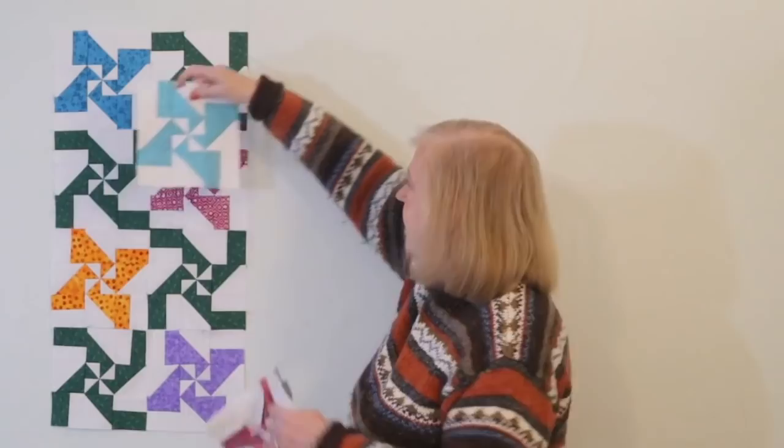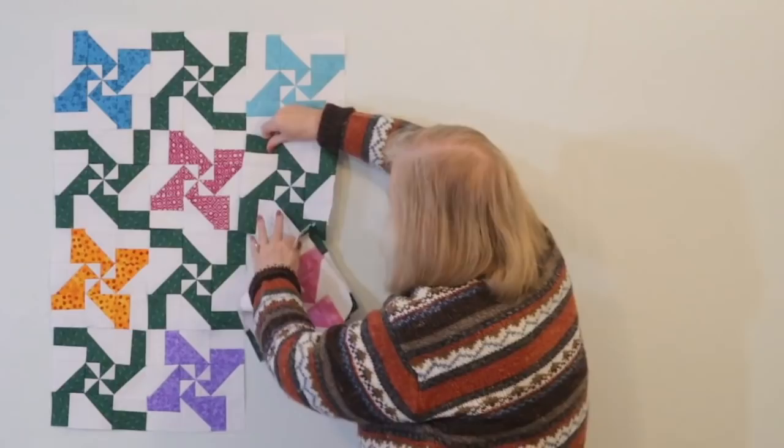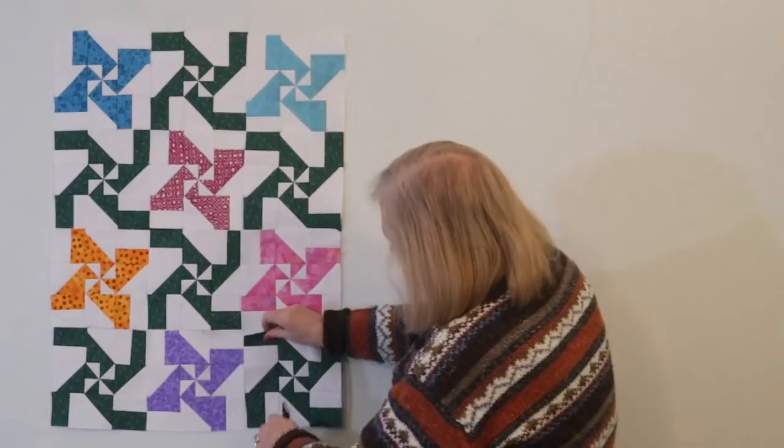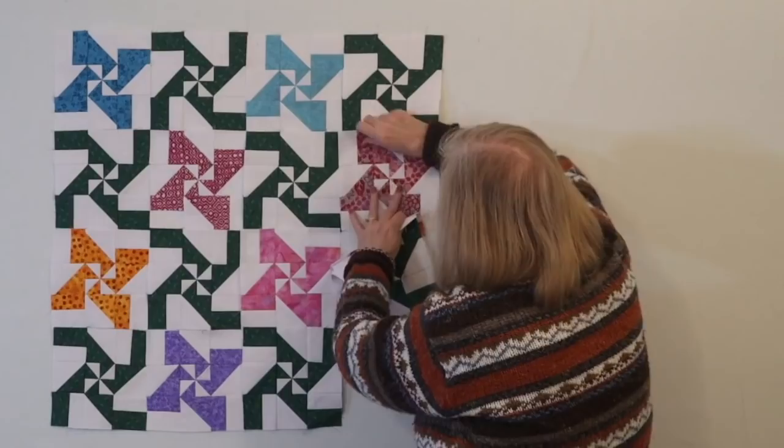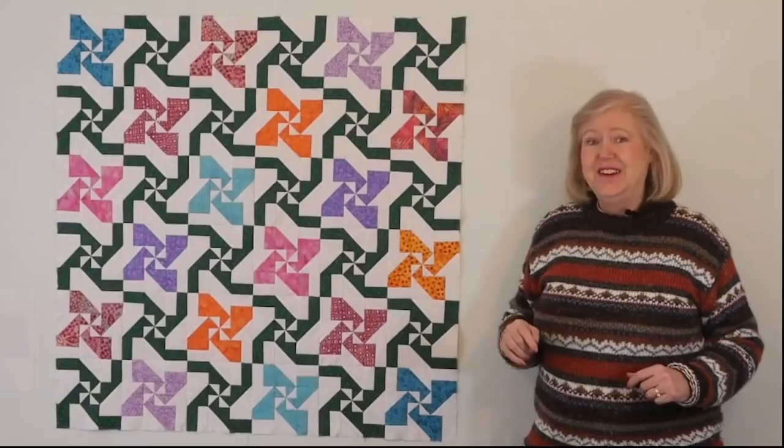And when they're sewn together, they look like this. Now that all the whirly gigs and daylilies are completed, all we have to do to make this quilt is to alternate daylilies, whirly gig, daylily, whirly gig, daylily, whirly gig. And we just keep going alternating them back and forth all the way down. Whirly gig, daylily. And then when they're all put together, they will look like this.